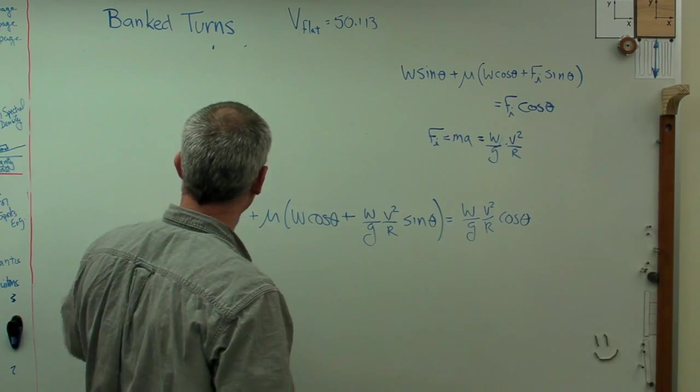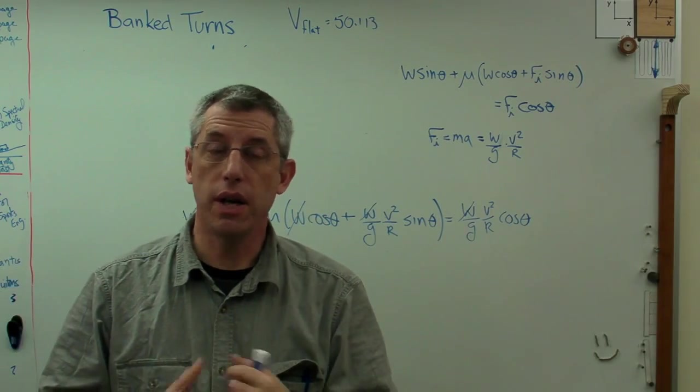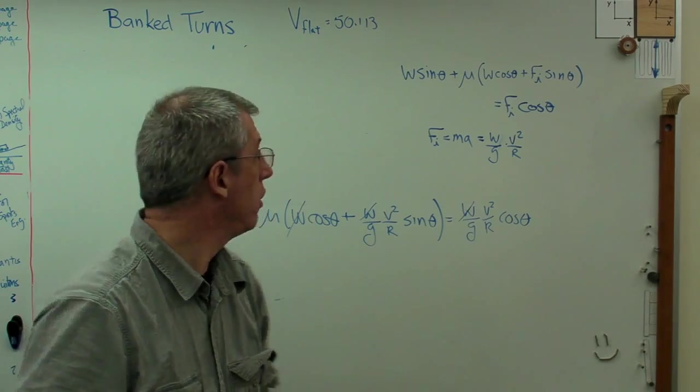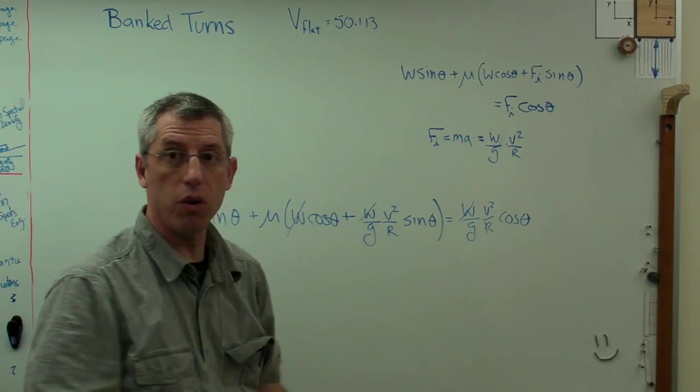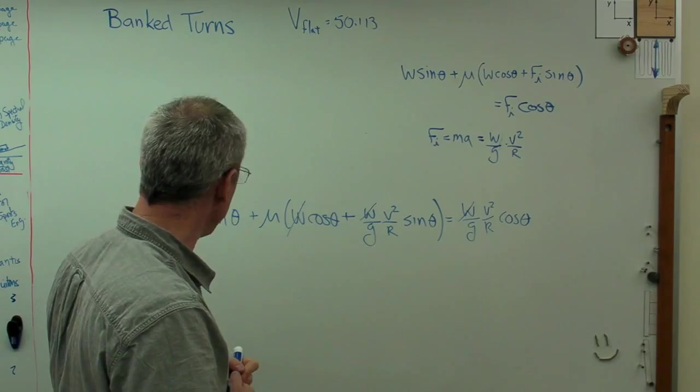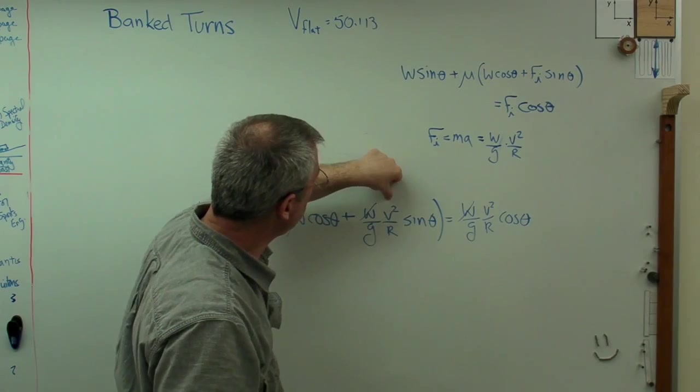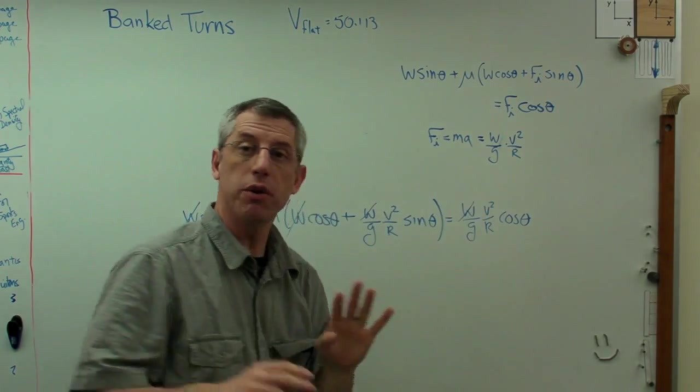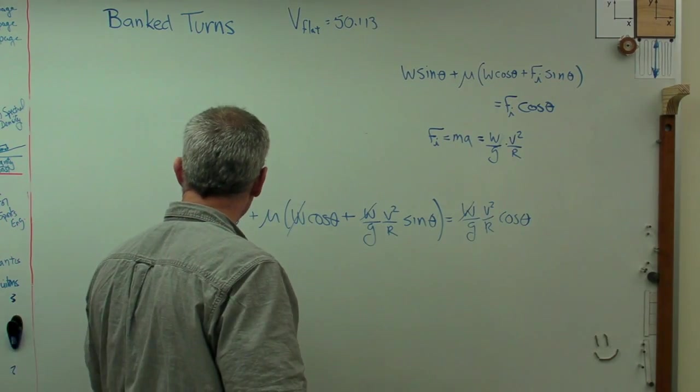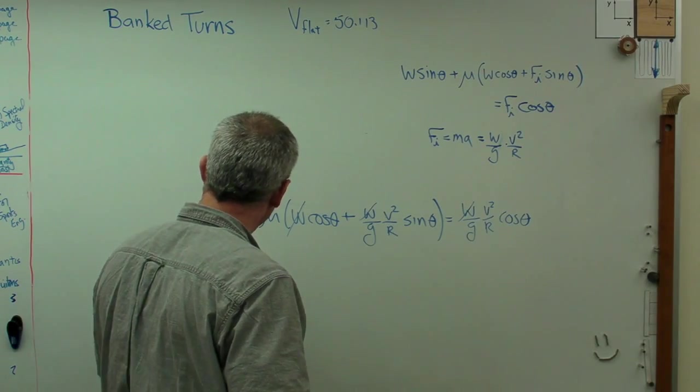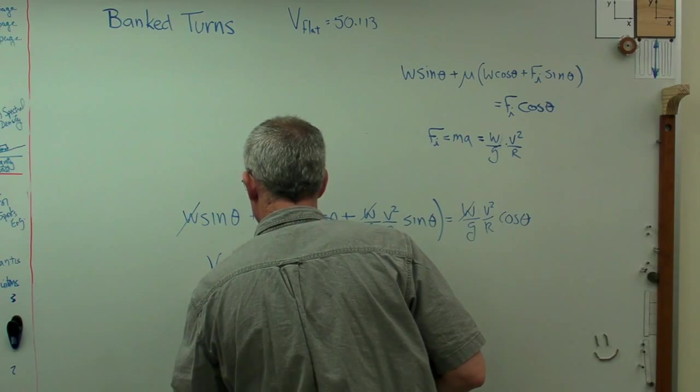First thing to notice here is w cancels out, it shows up in every term. What that means physically is that w doesn't matter, doesn't matter how much the car weighs. You're going to get the same answer whether this is a little go-kart or some giant truck. We've got one equation. What don't we know here? We know theta, we know mu, we know r, don't know v squared. So we've got one equation and one unknown. Since I don't want to spend too much more time on this, I went and solved this.